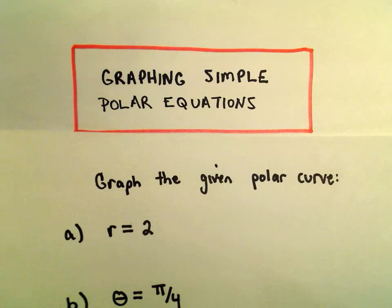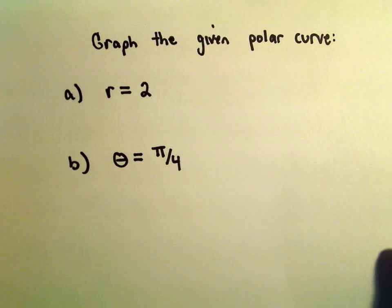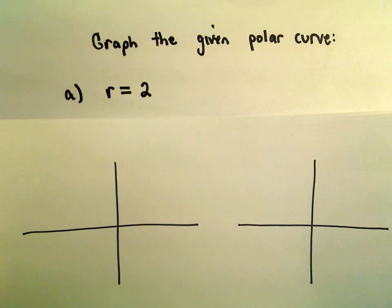All right, in this video we're going to talk about graphing some simple polar equations. So here we're going to graph r equals 2 and theta equals pi over 4. There's two different ways you can think about these.